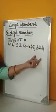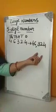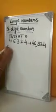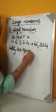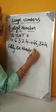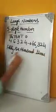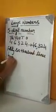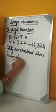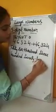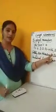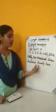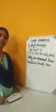This is a 5 digit number. Let us write the number name for this number — that is 46,324. This is about the 5 digit number, how to write it, how to separate the place values with commas, and how to write the number name. Now let us go with the next number.